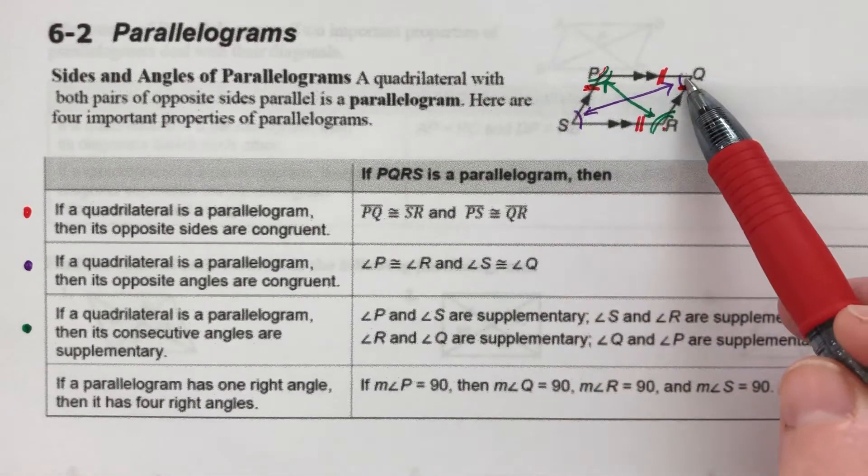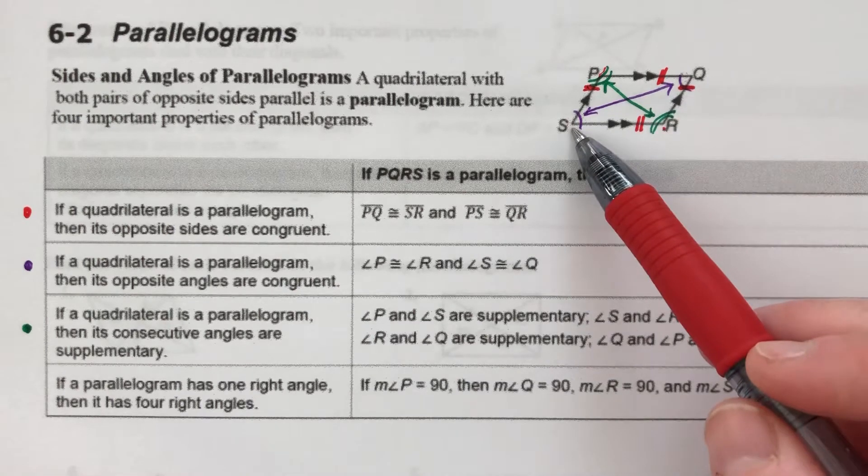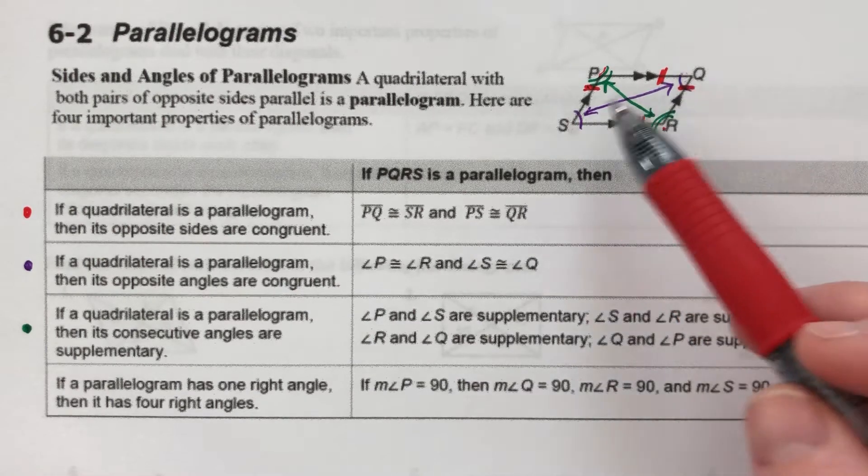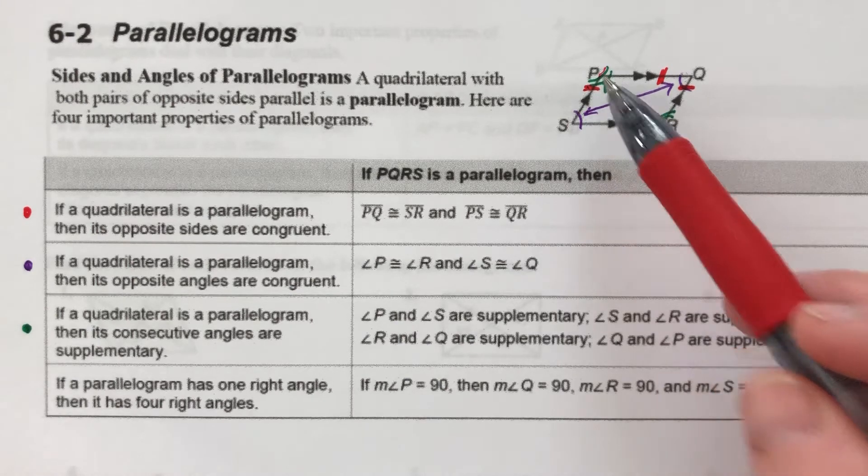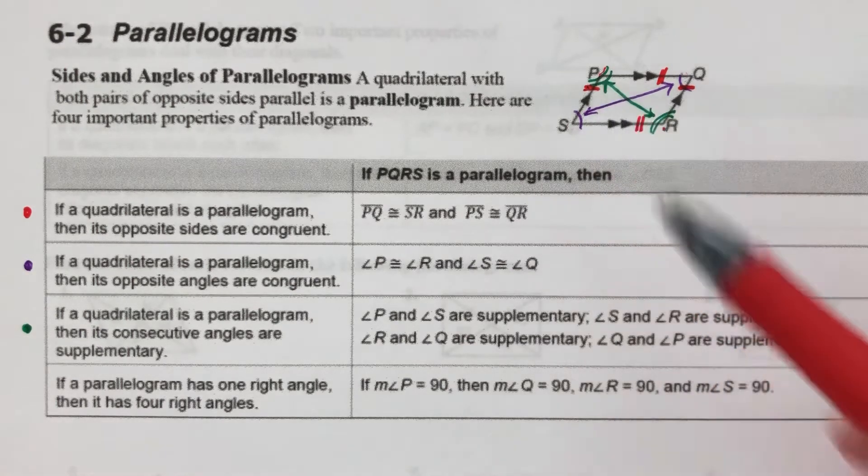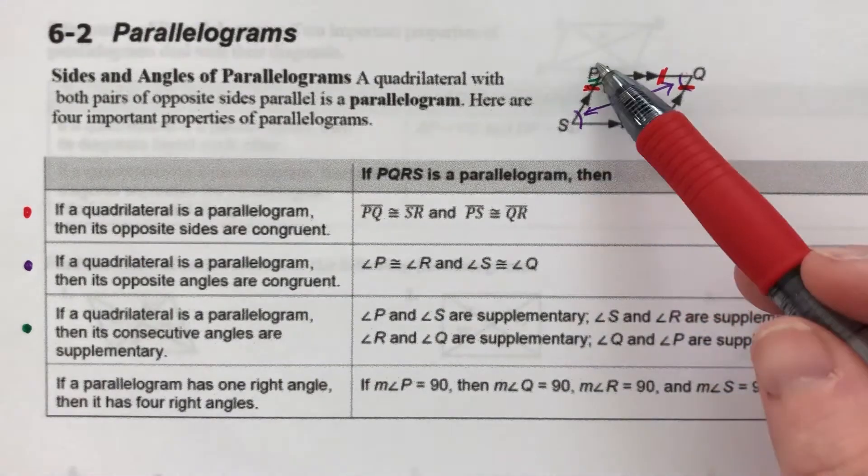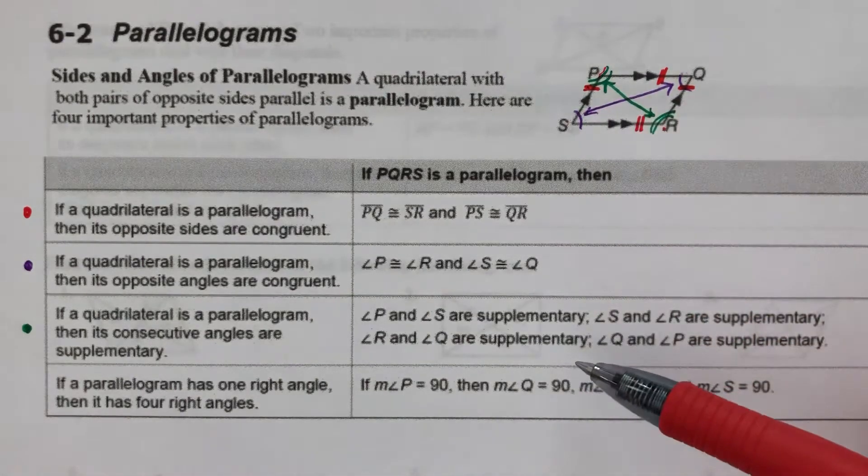S and Q are the same size. So if S is 60, Q is 60. But S and P are supplementary. So if S is 60, P would have to be 120. They're whatever they need to be to add up to 180.